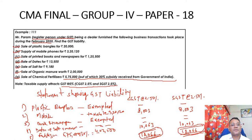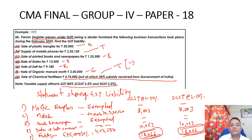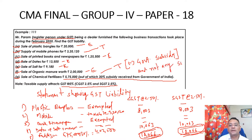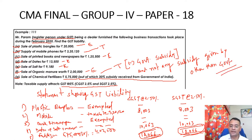Please note: plastic bangles are exempted supply; mobile phone is taxable; printed books are exempted supply; dates, salt, and organic manure are all exempted supplies; fertilizers are taxable. However, reduce the government subsidy from taxable value. Please note that only government subsidy will be reduced, and not any subsidy given by other than government.